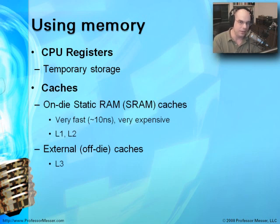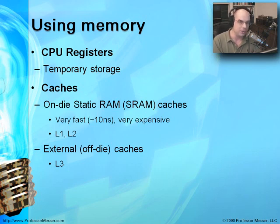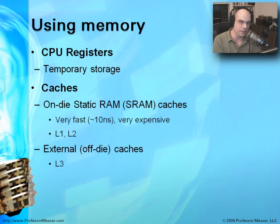Just outside the CPU — and in most cases embedded as part of it — are caches. These are on-die caches, actually part of the circuitry of the CPU. The type of RAM in a cache is called static RAM, or SRAM. This static RAM is very fast — extremely fast memory — but it's also really expensive. That's why there isn't a lot of it, and why we don't build entire systems with this fast memory.